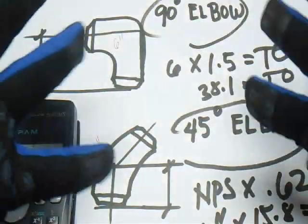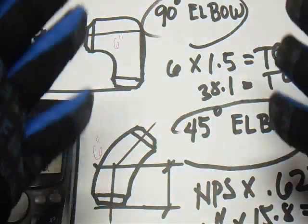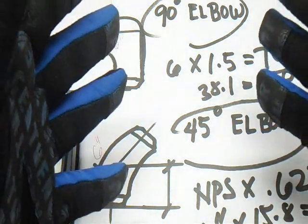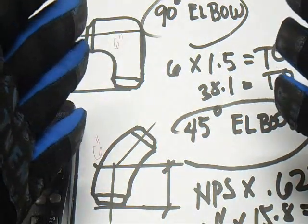This is all the formulas for the take-off for the 90-degree and 45-degree elbow. Thanks for watching, bye.